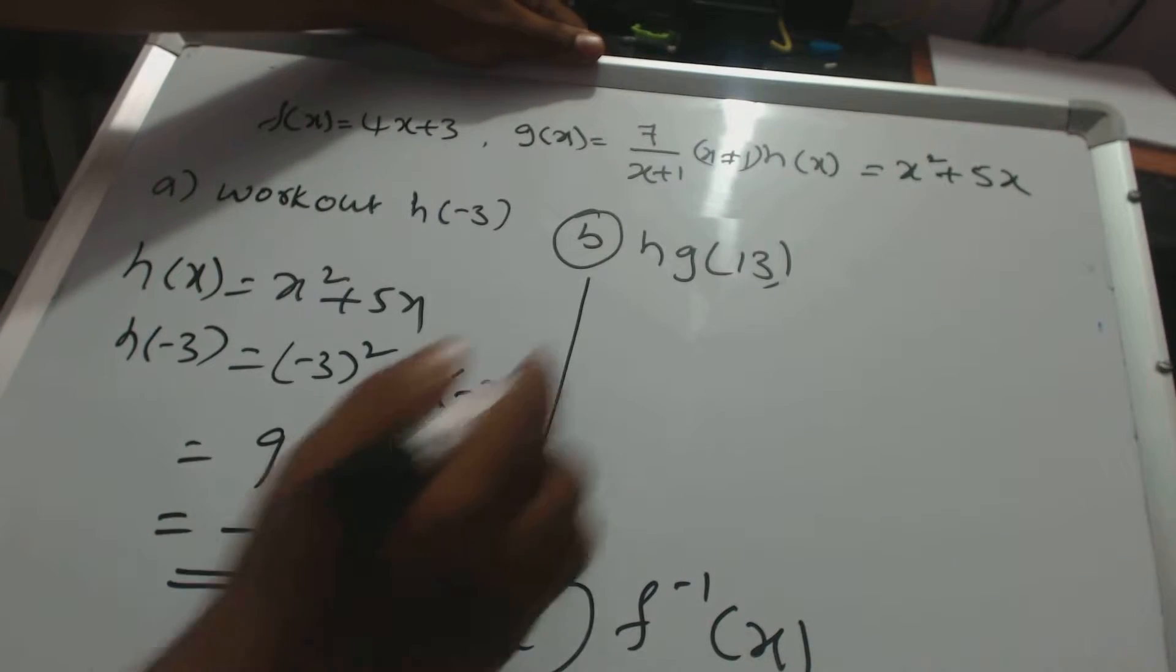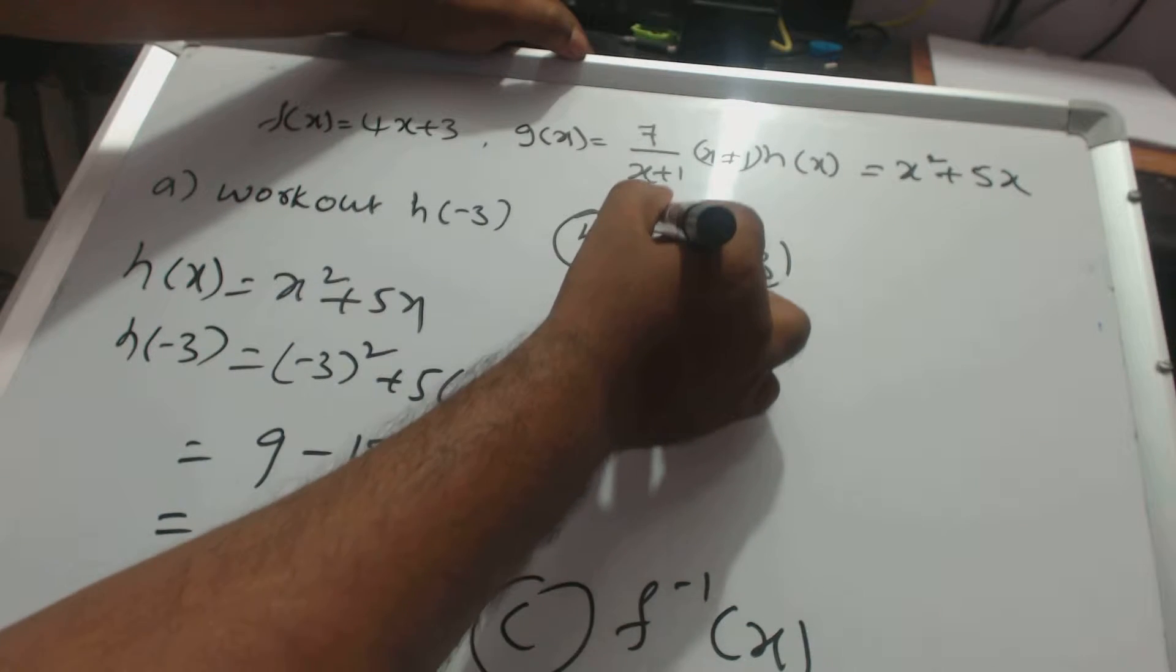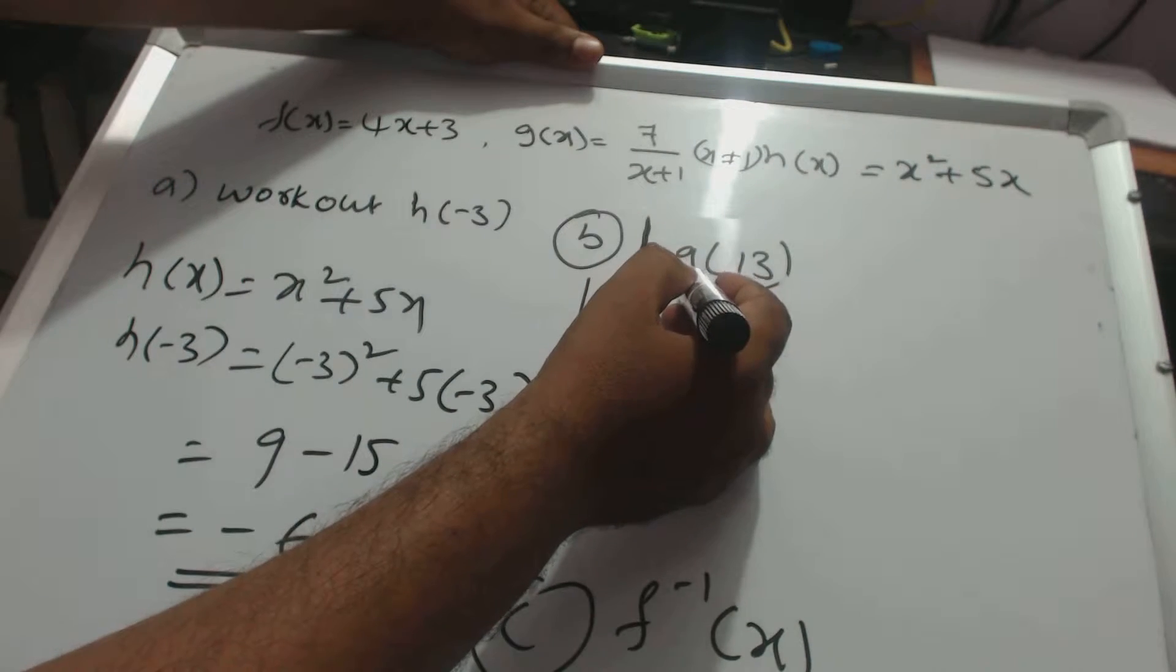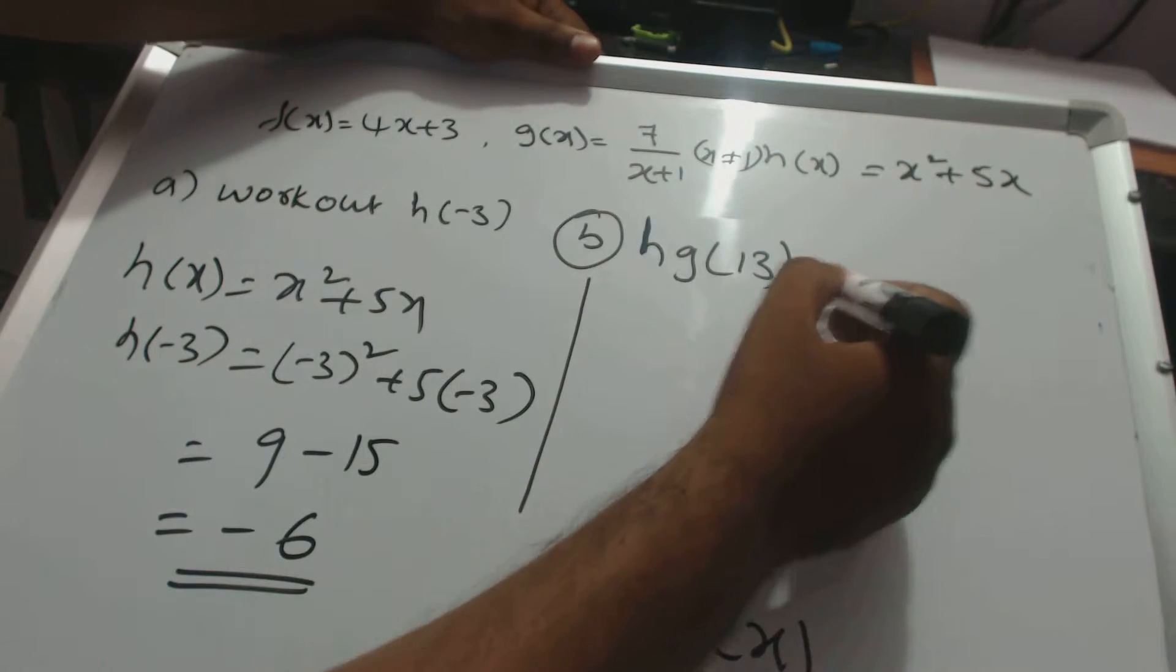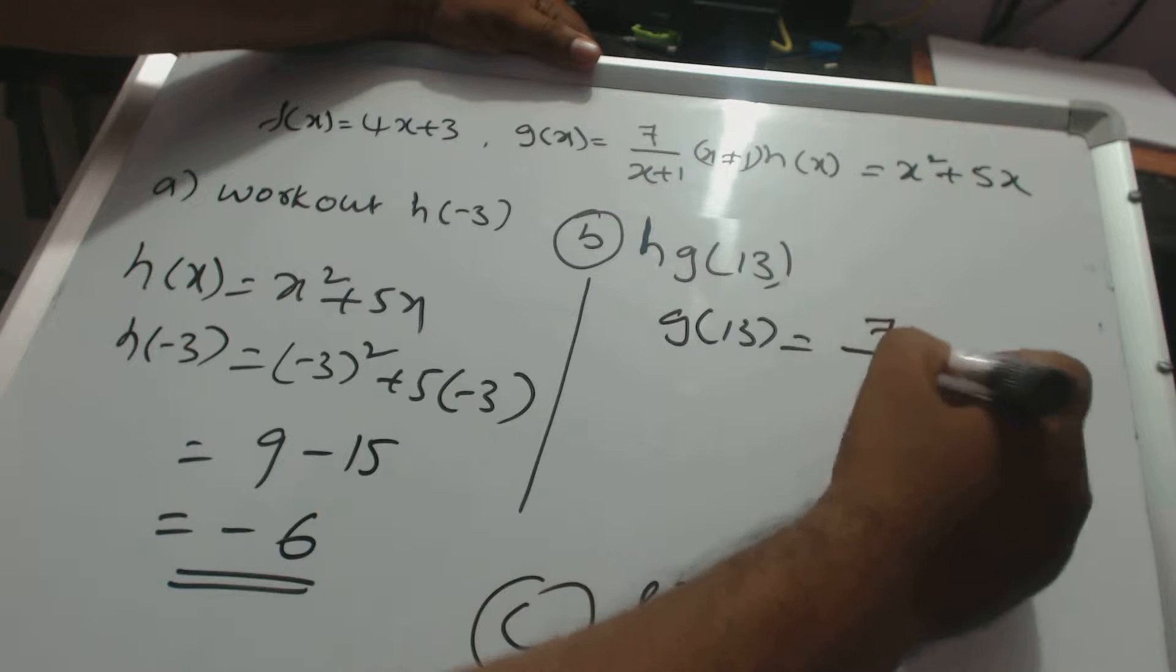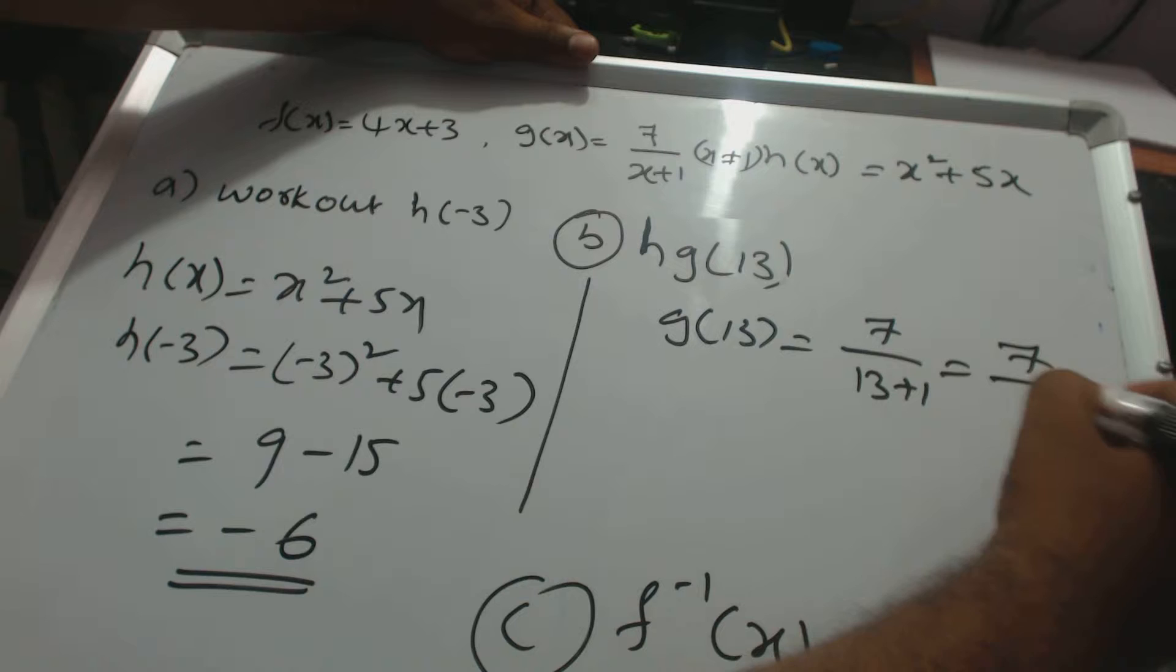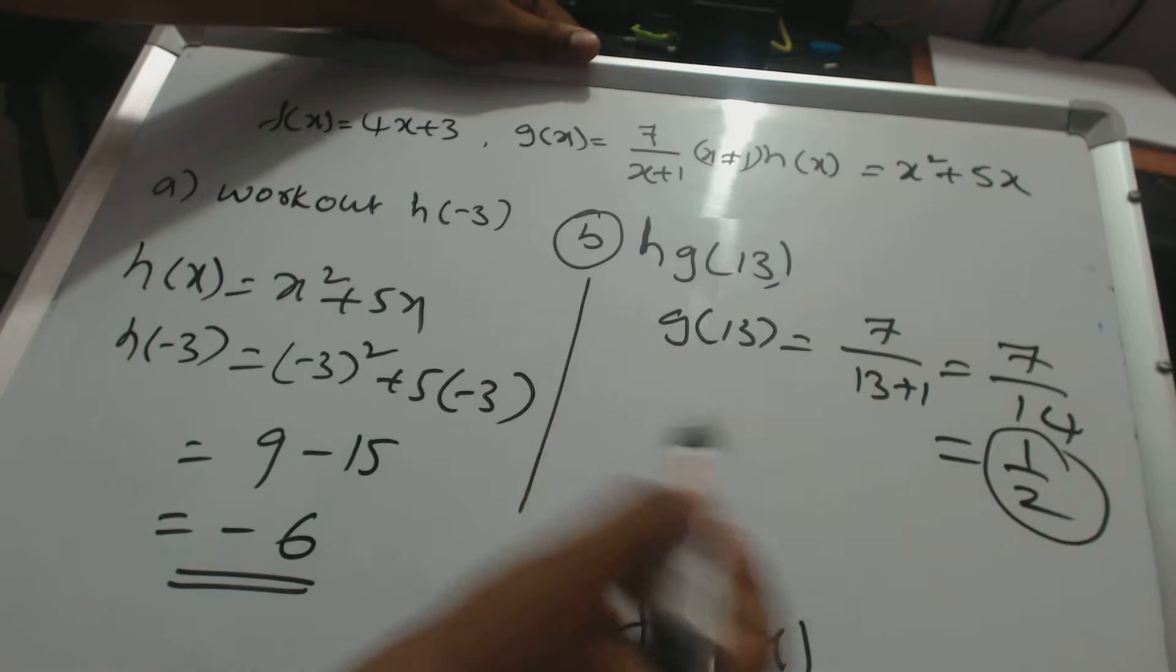Next, composite functions. A composite function means you're using more than one function together. Let's find g(13). Substituting 13 into g(x), we get g(13) = 7/(13+1) = 7/14 = 1/2.